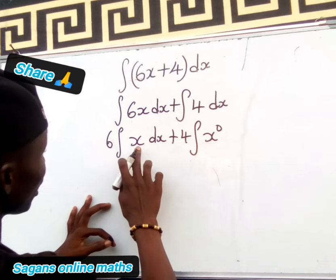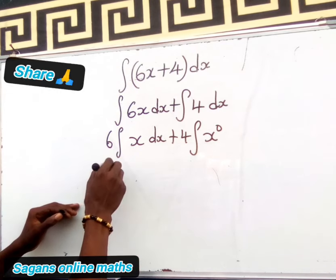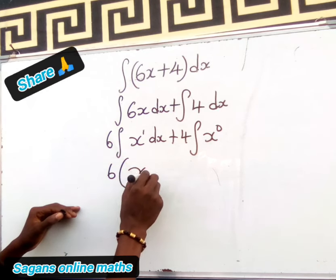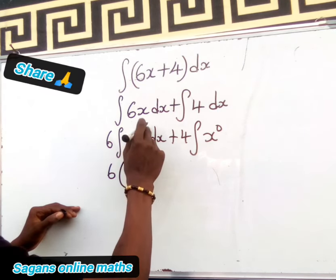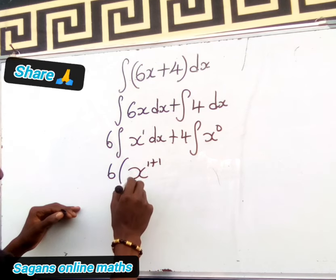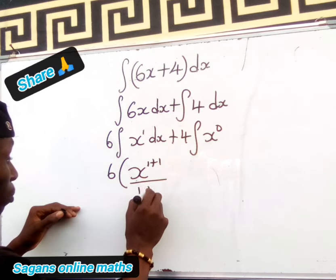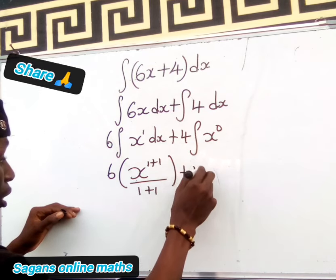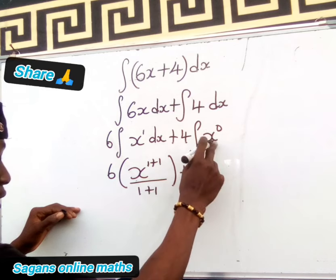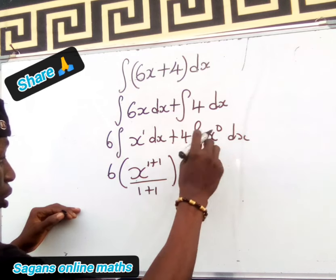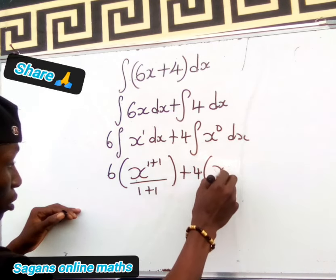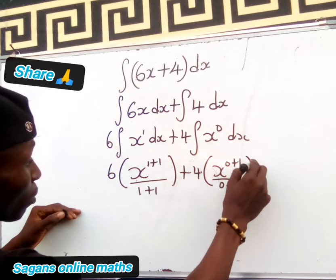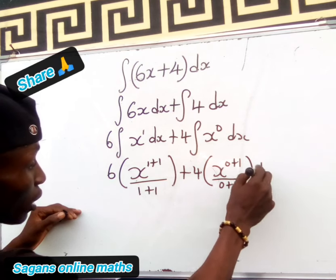Let's integrate x with respect to x. This is 6 times x to the power of (1 plus 1) divided by (1 plus 1), then close the parenthesis. Then plus this 4 times x to the power of (0 plus 1) divided by (0 plus 1), close the parenthesis, plus the integration constant C. Don't forget this, very important.